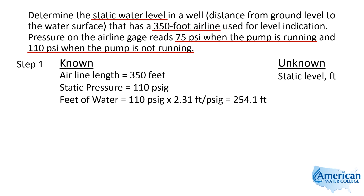To calculate the total column of water above the discharge of this bubbler tube, we take 110 pounds per square inch — the static pressure when the pump is not running — and multiply it by 2.31 feet per psi. For every 2.31 feet of water column, that's 1 psi. That gives us a total water column length of 254.1 feet.